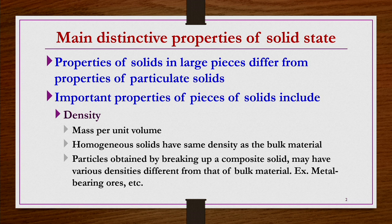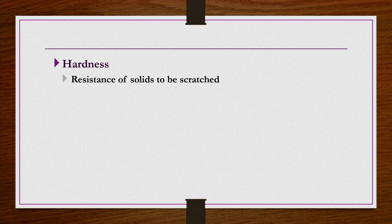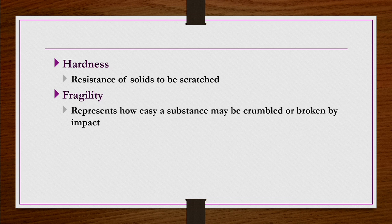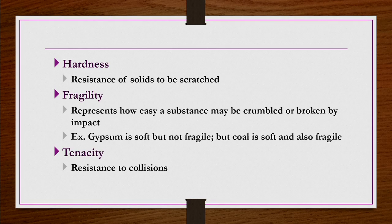Hardness represents the resistance of solids to scratching and is different for bulk material compared to particulate solids. Fragility represents how easily a substance may be crumbled or broken by impact — for example, gypsum is soft but not fragile, whereas coal is both soft and fragile. Tenacity, which is resistance to collisions, also differs between particulate solids and their bulk material.